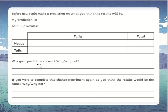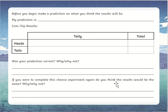Then put in whether your prediction was correct and why or why not. If you were able to complete this chance experiment again, do you think the results would be the same? Put in yes, no, because.